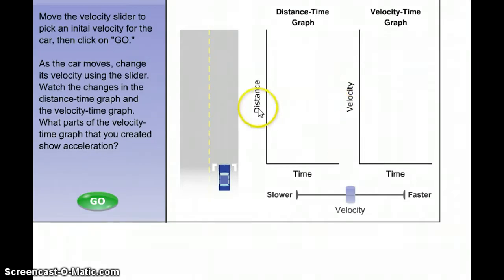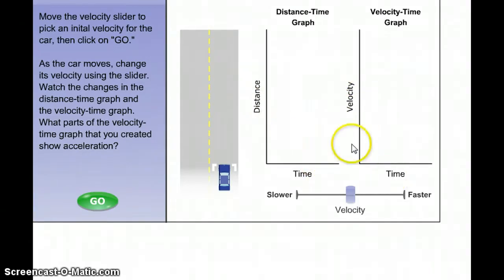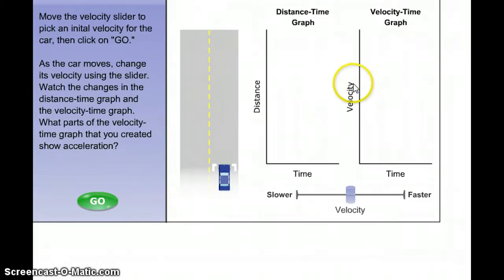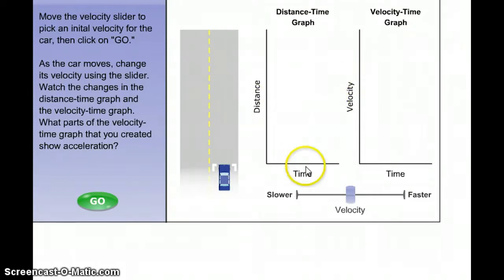The difference between a distance-time graph and a velocity-time graph is that a distance-time graph shows how far the object traveled, while a velocity-time graph shows how fast the object traveled. Now these graphs don't have any numbers, but let's imagine that they do.